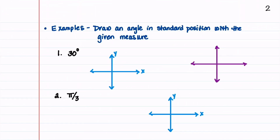We'll now look at some example problems where we're given an angle that we need to draw in standard position. Before we begin drawing these angles, it will be helpful to make a diagram of the four quadrants of the x-y plane. On the right, we have 0 degrees or 0. At the top, we have 90 degrees or pi over 2. On the left, we have 180 degrees or pi. And at the bottom, we have 270 degrees or 3 pi over 2.